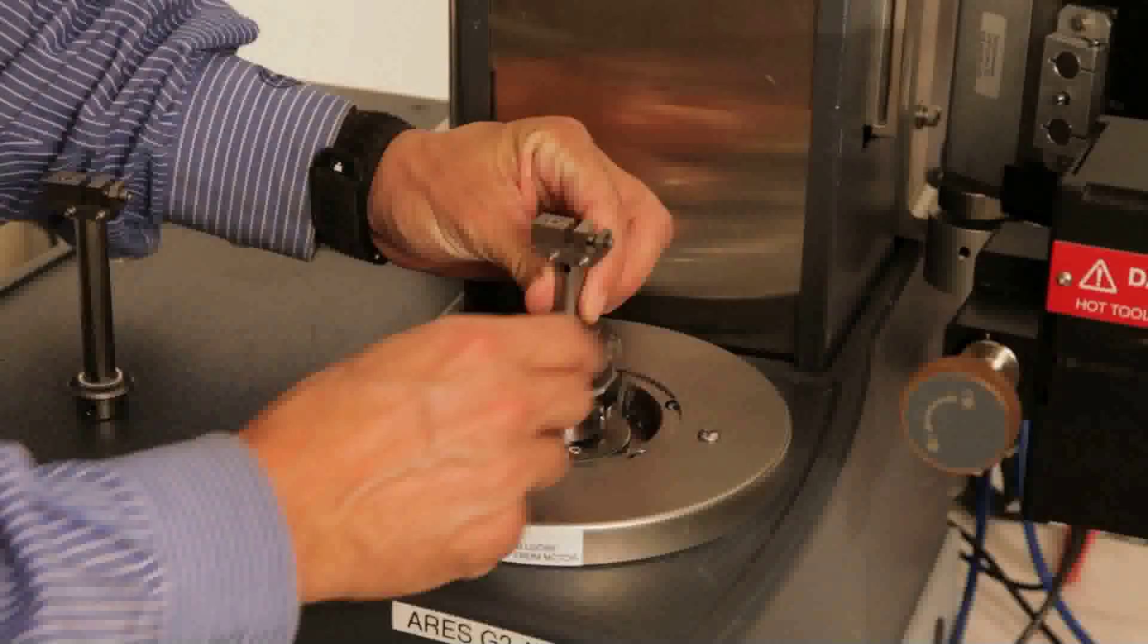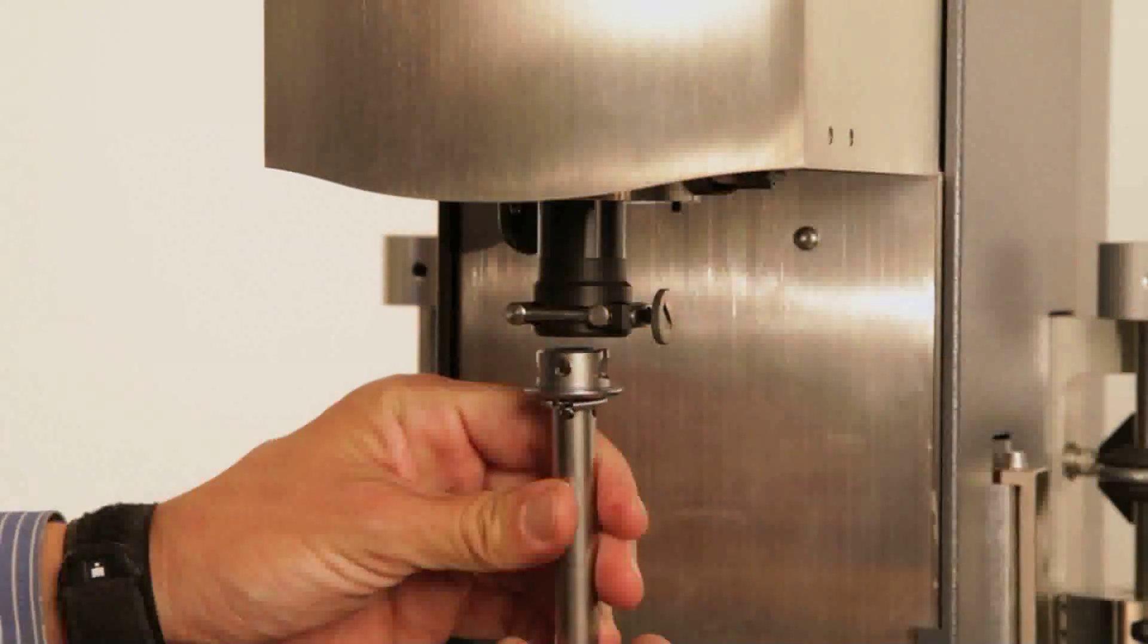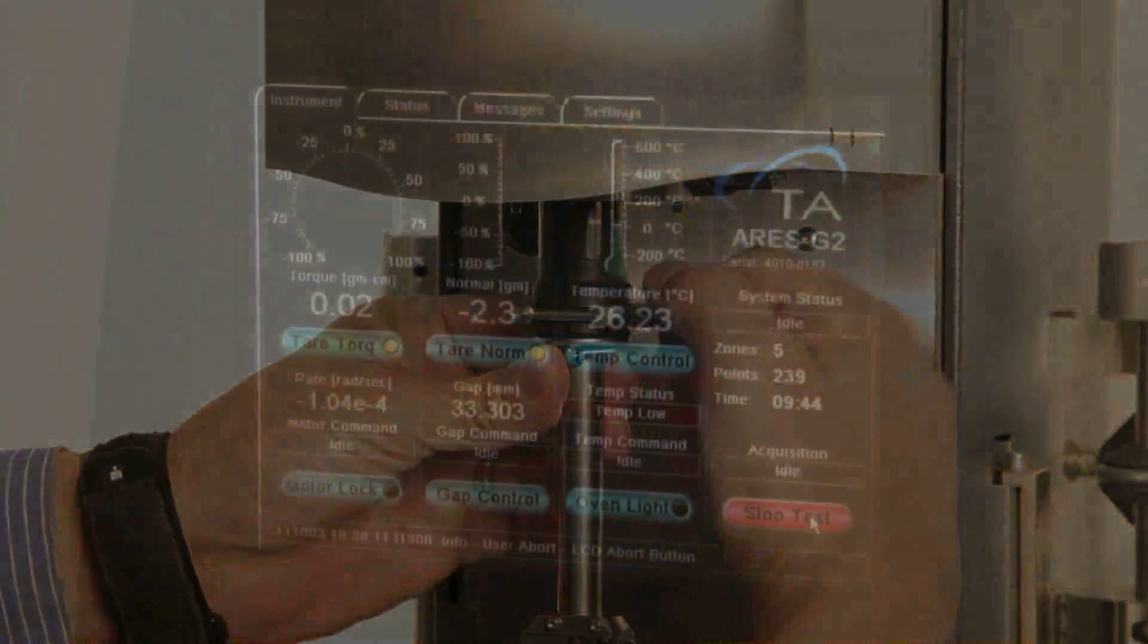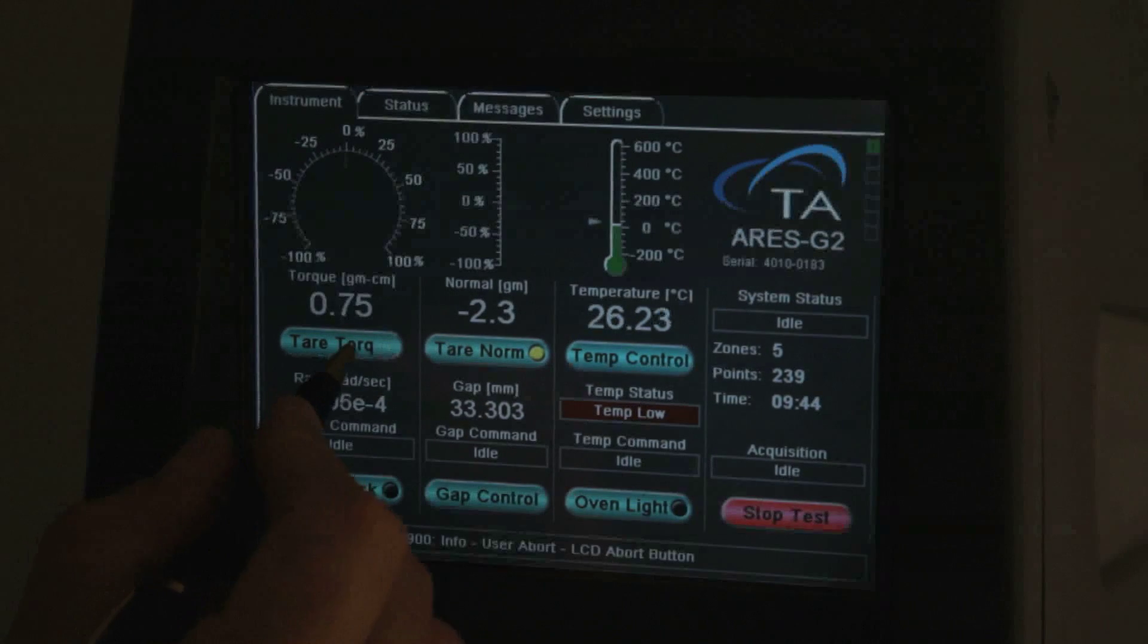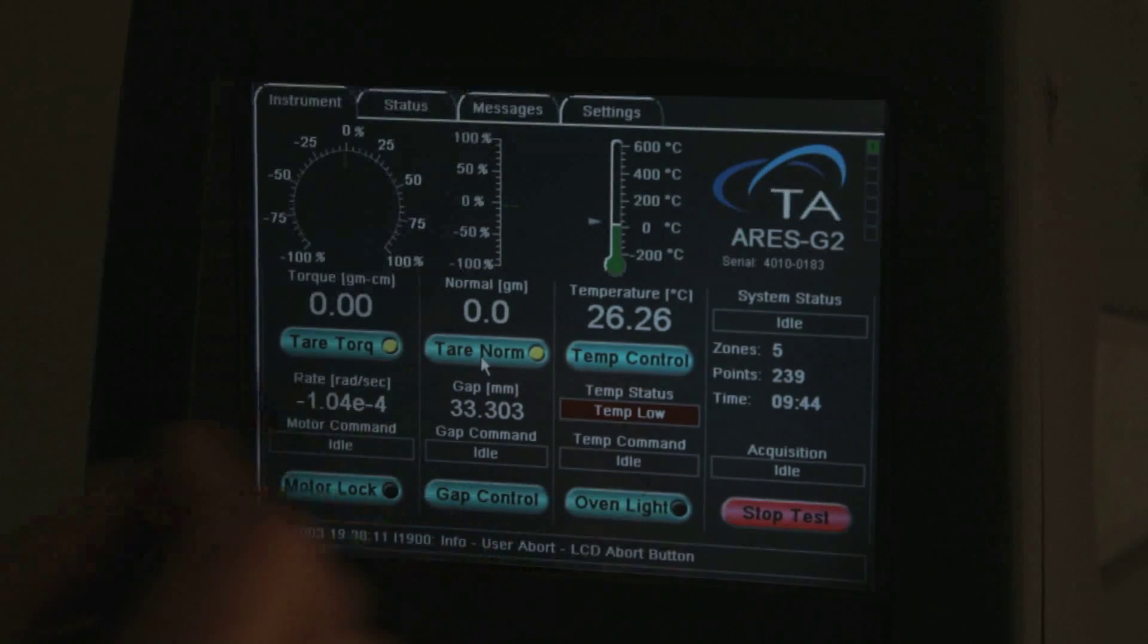Mount the lower fixture onto the motor mount. Mount the upper fixture onto the transducer shaft. Tare the torque signal and axial force signal using the LCD touch screen.